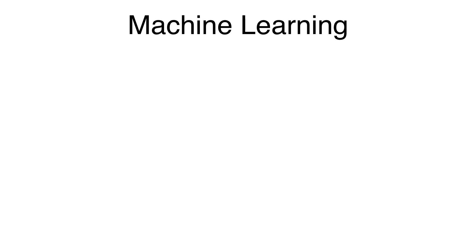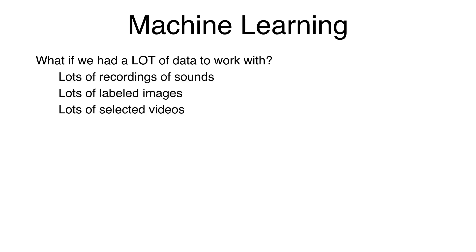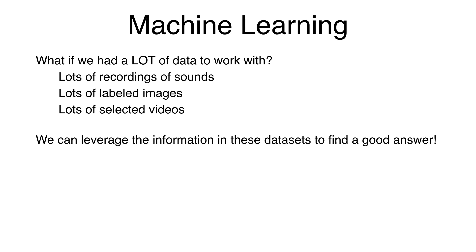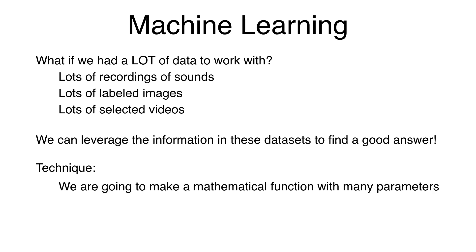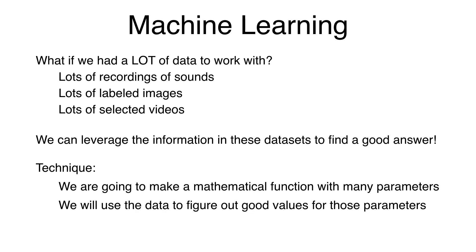This leads us to machine learning. The key to machine learning is asking the question: what if we had a lot of data to work with? For our three examples, that would mean a lot of recordings of sounds, labeled images, or selected videos by users. Can we leverage the information in these data sets to find a good answer? We are going to make a mathematical function with many parameters, and we will use the data to figure out what good values for those parameters might be.